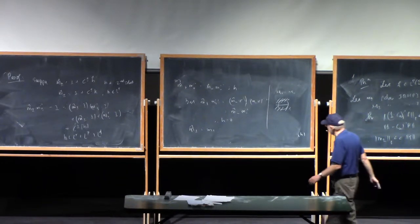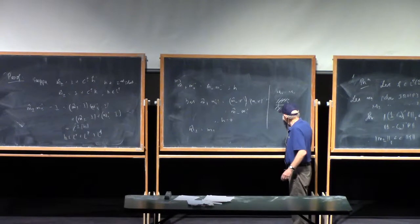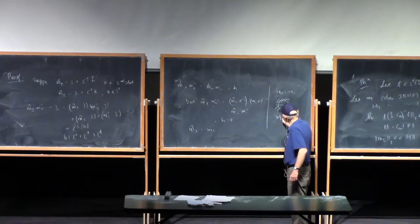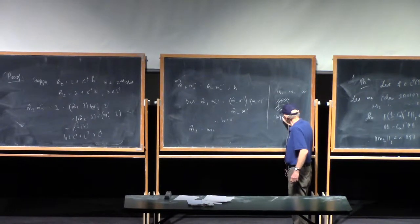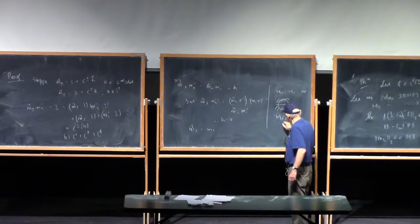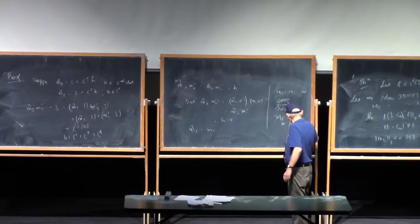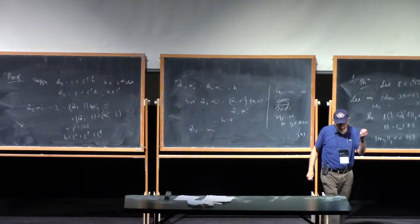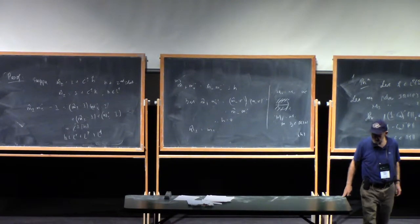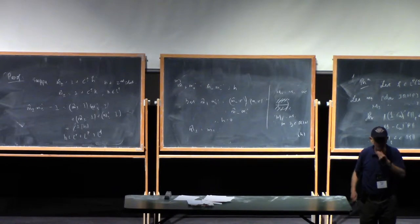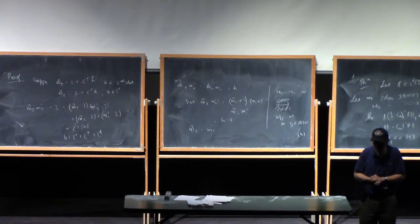Let me give you a trivial example. Let's suppose that m plus, remember this is almost everywhere. Let's suppose that m plus equals m minus for all z belonging to R take away 0. So there's two functions which are analytic, a function analytic above, analytic below, and it matches from the top and the bottom for all except one point.